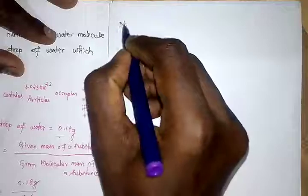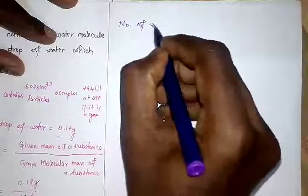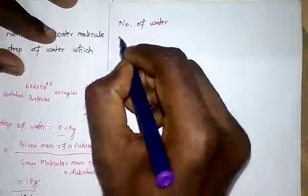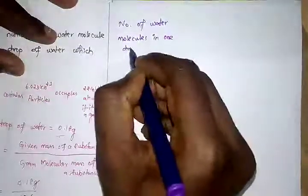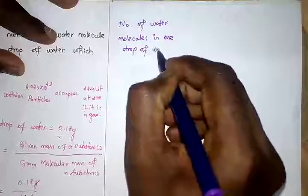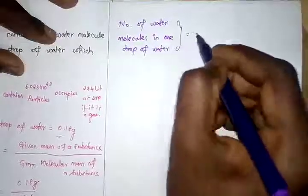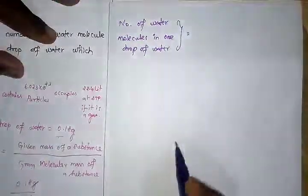Number of water molecules in one drop of water is equal to - how do you calculate? Yes, the number of moles × Avogadro number we want to multiply.